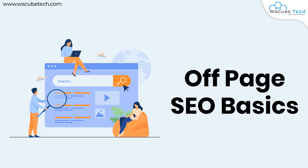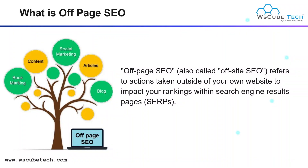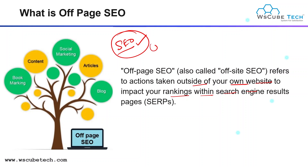Let's start Off-Page SEO with a basic definition. Off-Page SEO refers to actions that are outside of your website to impact your ranking within the search engine result page. As we already know, SEO stands for search engine optimization, and the motive of doing SEO is to improve our website ranking on Google search engine result page. Just like on-page SEO, we have off-page SEO.